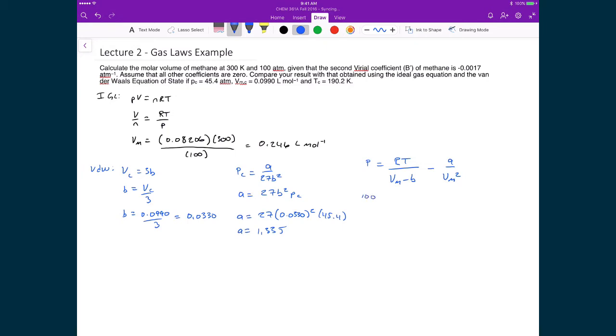So in this case, I can start substituting in numbers. The pressure is 100 atmospheres. I'm going to use the appropriate gas law constant, 0.08206. The temperature is 300 Kelvin. I have molar volume minus my B constant, which I just calculated, 0.0330. From that, I'm going to subtract off A, which is 1.335 divided by the molar volume squared.